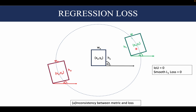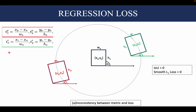Now, in the previous video we had seen that to compute the smooth L1 loss — that is the regression loss — we had taken these values for calculating the regression. So we see that along points on the circle which are equidistant from the center point coordinates of the anchor, these parameters would have the same value. What this implies is that the smooth L1 loss along all the points on this circle would be 0, which actually implies that along all these points on the circle, the IOU should be 1. But this is not the case.